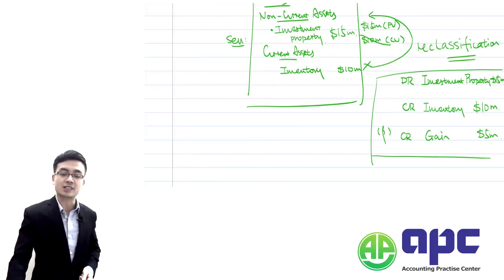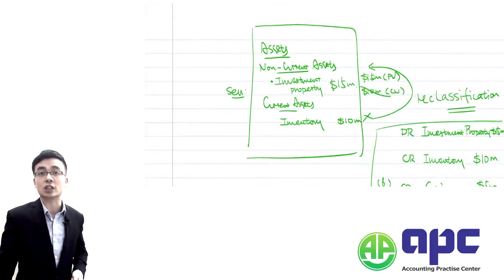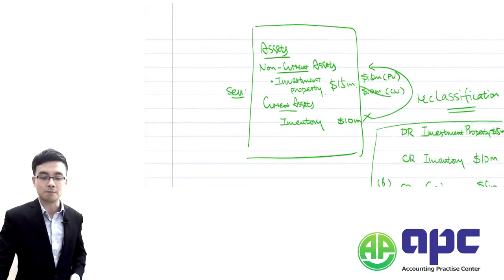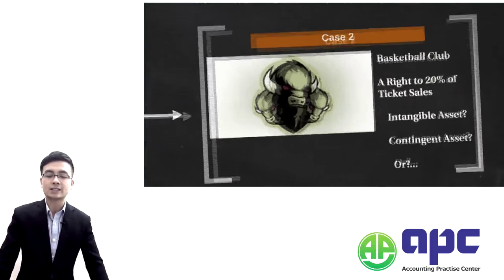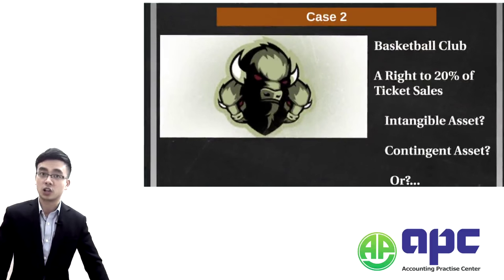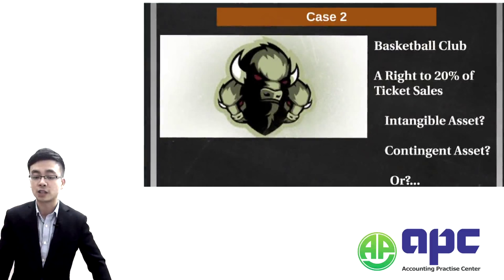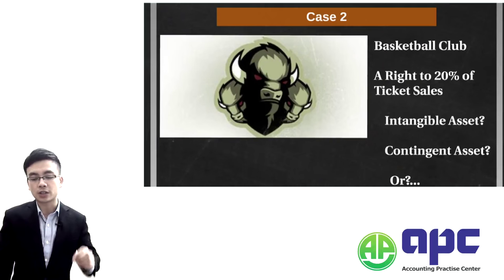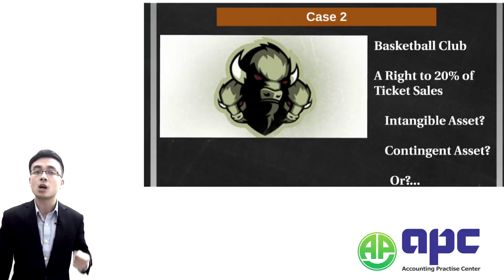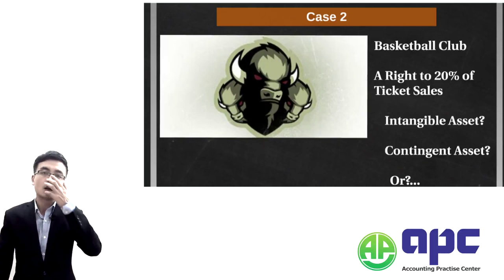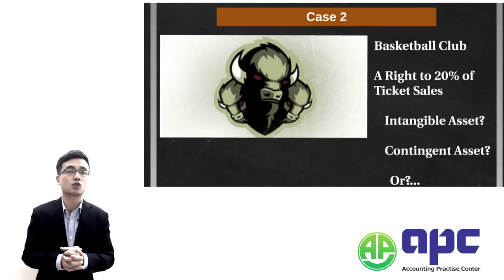That's just one example of the case study style in Paper 2. Another practical example related to this is a basketball club, which is an example the examiner uses to test non-current assets in your Paper 2 exam.